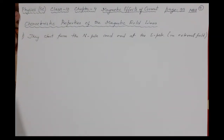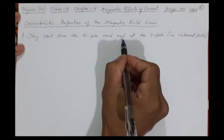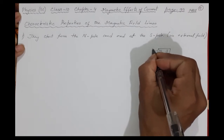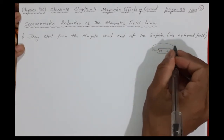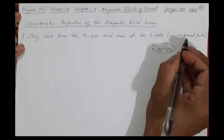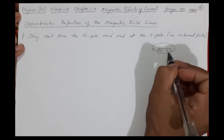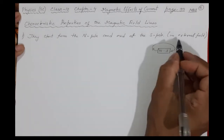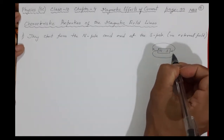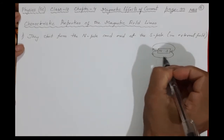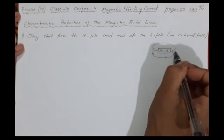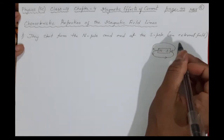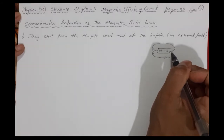The first property is that magnetic field lines start from the north pole and end at the south pole. Suppose this is a magnet with north and south — the lines come out from the north. Externally, outside the magnet, they go from north to south. Internally, inside the magnet, they go from south to north. So outside, lines come out from the north and go to the south. Just like plus and minus — N is like positive, S is like negative — lines come out from the positive and enter the negative.